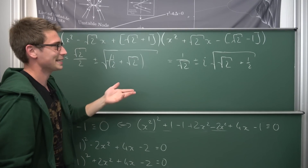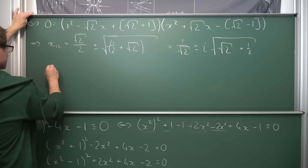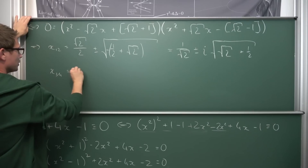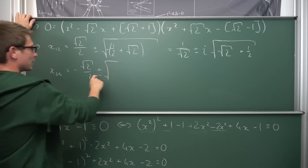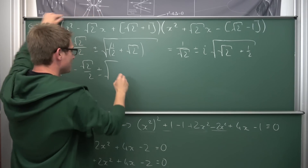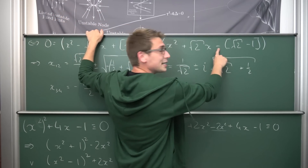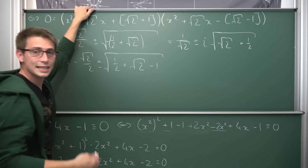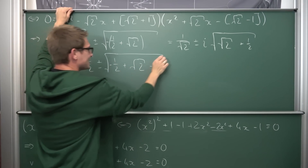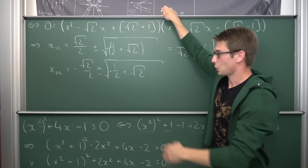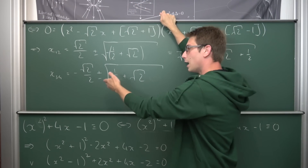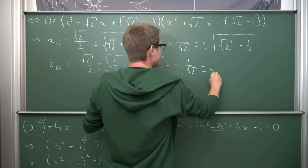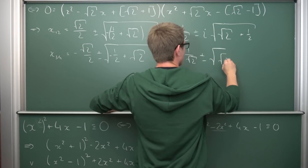For the second factor, x₃,₄ = −√2/2 ± √(1/2 + (√2−1)). Here the two negatives cancel, giving a positive discriminant: 1/2 + √2 − 1 = √2 − 1/2 > 0. So these are purely real solutions: x₃,₄ = −1/√2 ± √(√2 − 1/2). And those are all four solutions to our quartic polynomial.